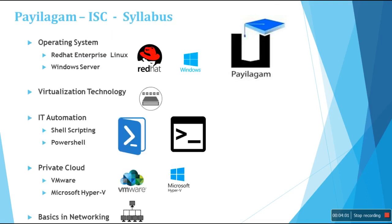The IT Infrastructure Support course syllabus covers most IT support technologies to give you an overview of how IT infrastructure is constructed. For operating systems, we cover Red Hat Linux and Windows Server. You should also know virtualization technology, as cloud is built on virtualization. For IT automation, we cover shell scripting and PowerShell basics. For private cloud, we cover VMware and Microsoft Hyper-V products, and for networking, we cover the networking architecture needed for a company.